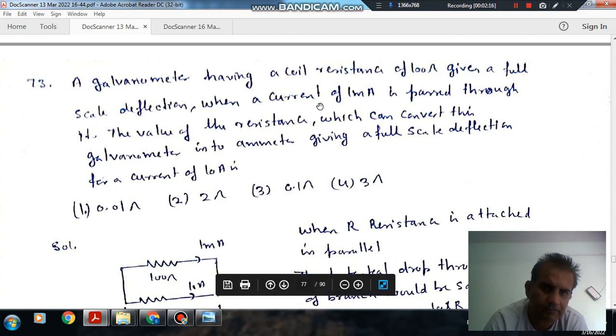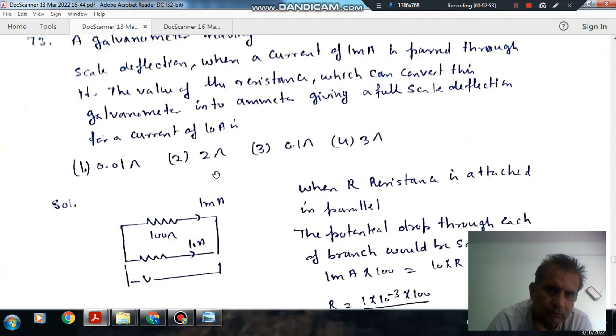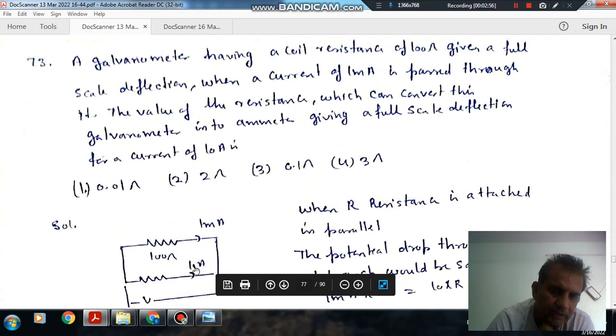The galvanometer has a coil resistance of 100 ohm, and 1 milliampere passes through it for full scale deflection. A resistance R is to be connected in parallel to convert it into an ammeter measuring up to 10 milliampere.